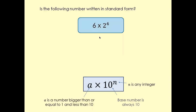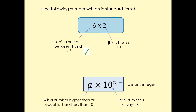Is the following number written in standard form? For a number to be in standard form it has to follow all three criteria. Is A bigger than or equal to 1 and less than 10? Yes — tick. Is the base 10? No, it's not. Because it doesn't follow that criteria, this number is not written in standard form.